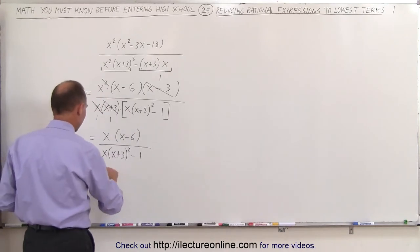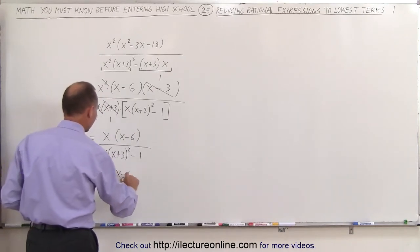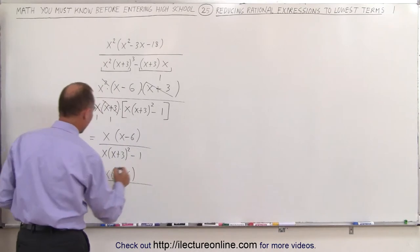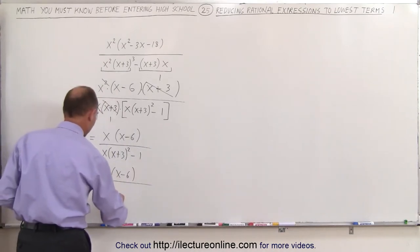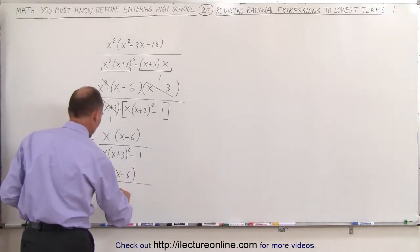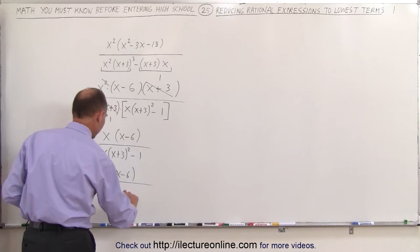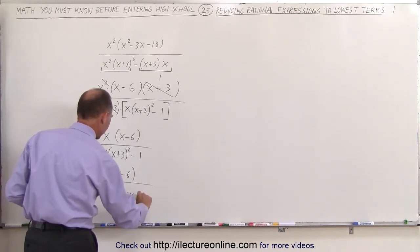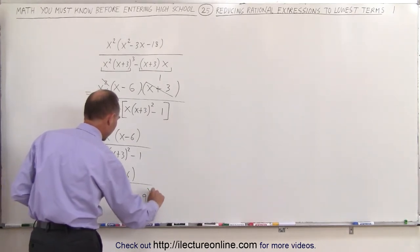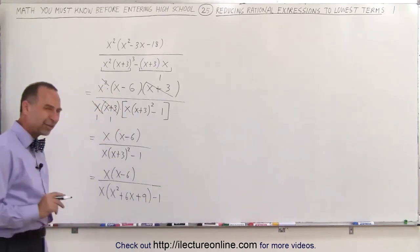So this can be written as x times x minus 6 in the numerator, and in the denominator I can write as x times x squared plus 6x plus 9 minus 1.